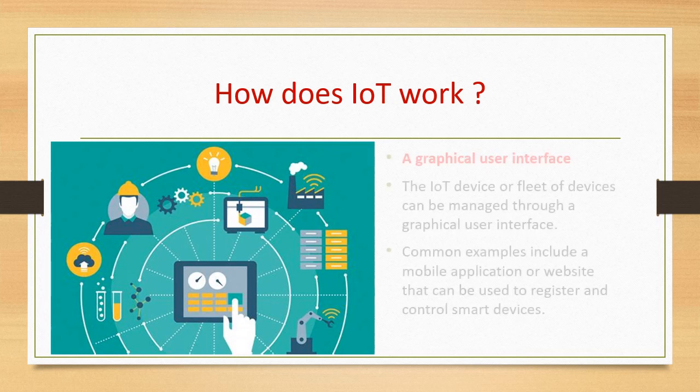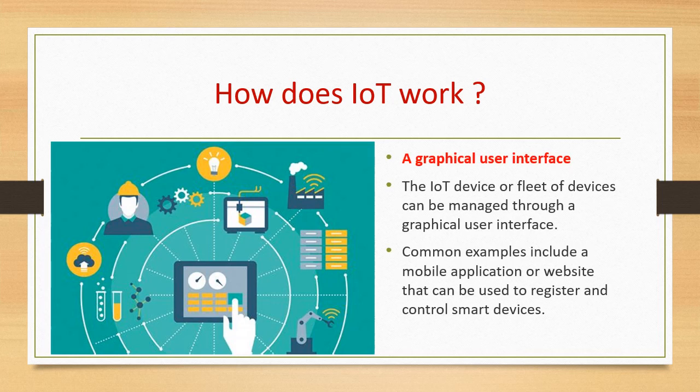The third component is the graphical user interface, or GUI. It is part of the application where the user can interact to take various decisions. For example, if you want to send a command to your home IoT devices, you can log into the GUI and take the necessary actions. A common example is a mobile application, or a website where you can register and control smart devices. The GUI is an important part of the IoT system.